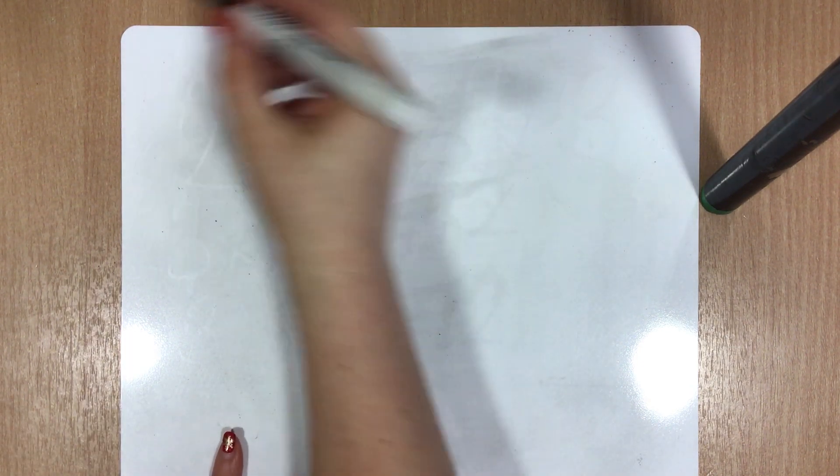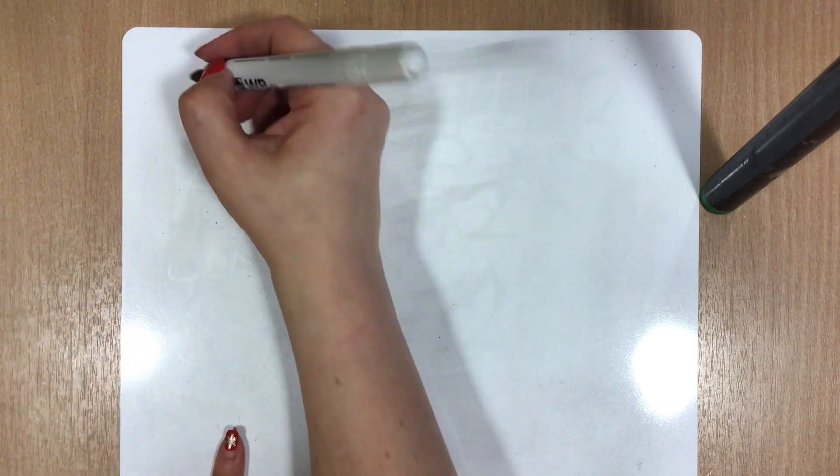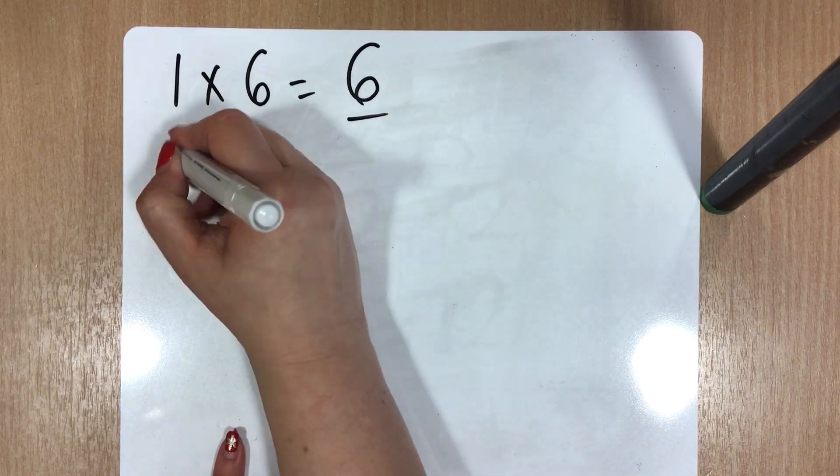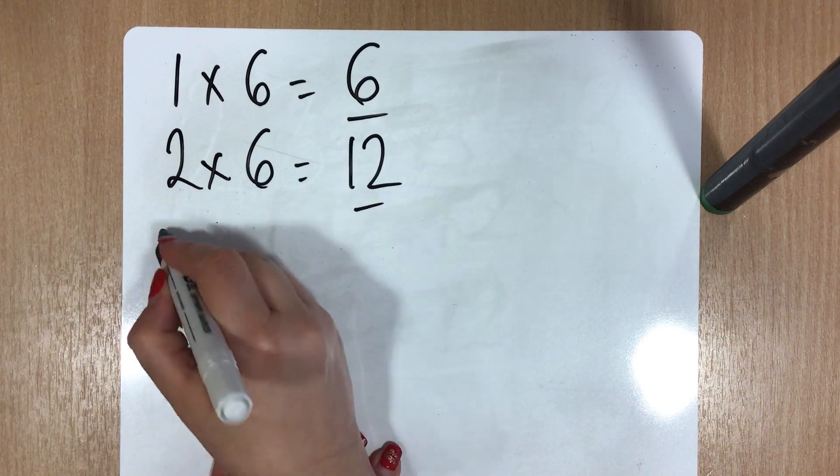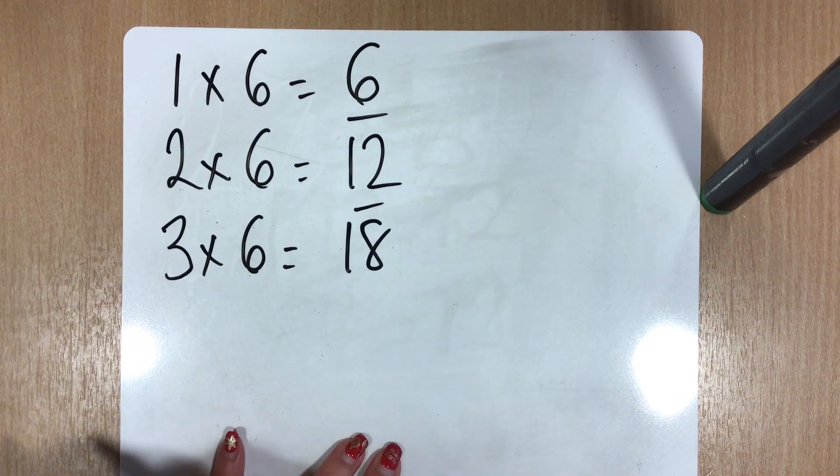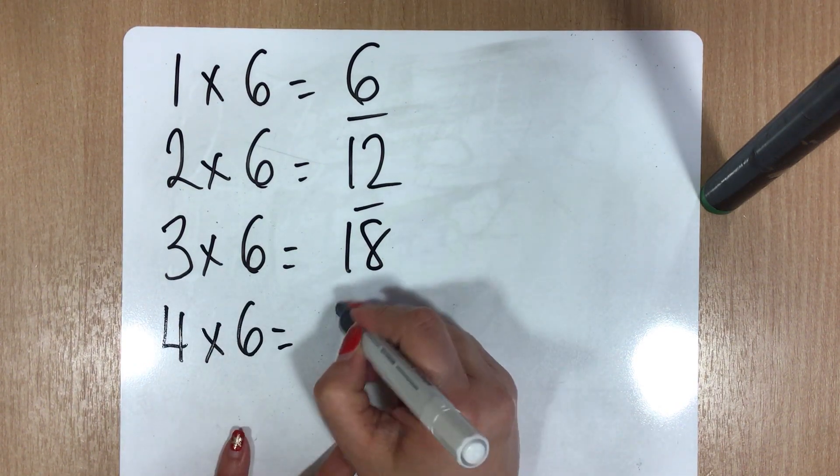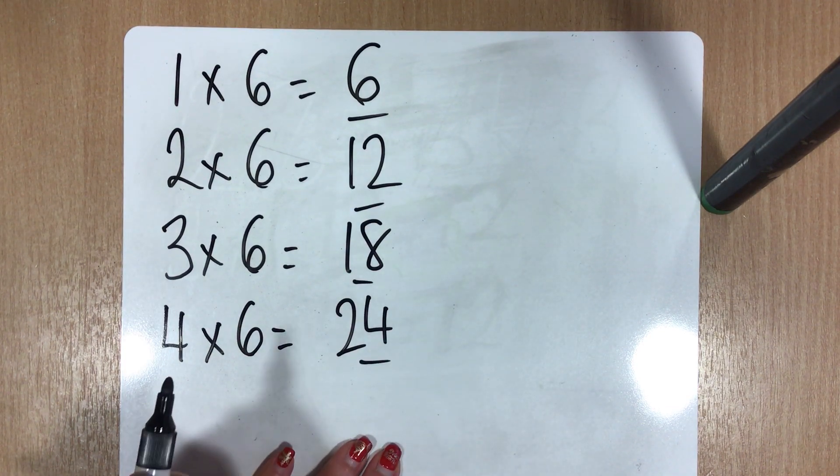So for instance, if we were looking at multiples of 6, you could have 1 times 6 equals 6, 2 times 6 equals 12, 3 times 6 equals 18, 4 times 6 equals 24, and so on.